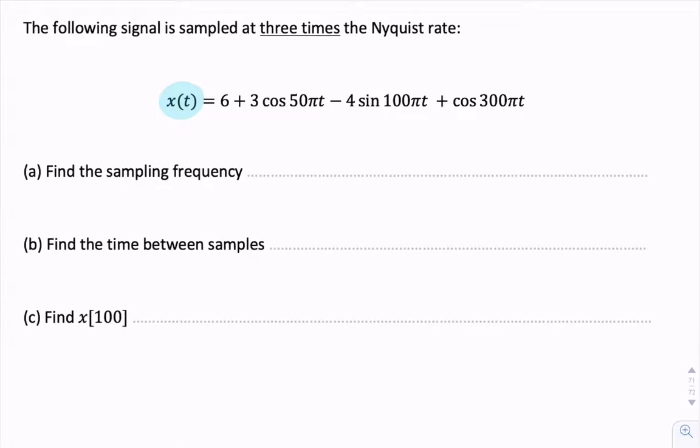I guess we would first need to find the Nyquist rate and then multiply it by three. So, the sampling rate is three times the Nyquist rate, and the Nyquist rate would be two times the highest frequency component in the signal.